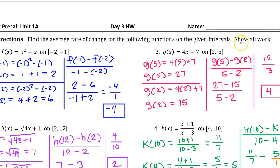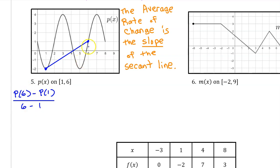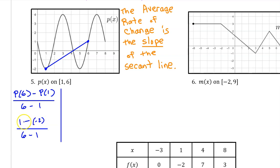However, the directions say to show all work. Using the average rate of change formula: p(6) is 1 and p(1) is −2. So 1 minus −2 is really 1 plus 2, which is 3. And 6 minus 1 is 5. So the average rate of change is 3 over 5.